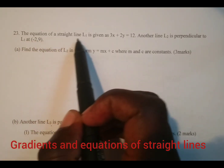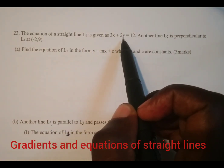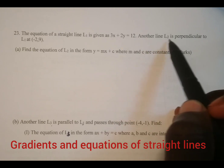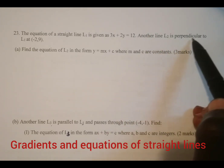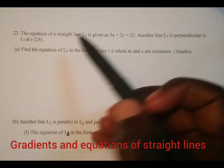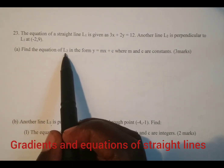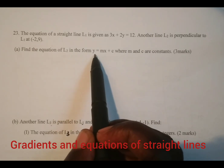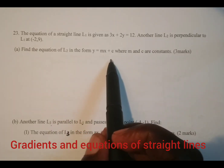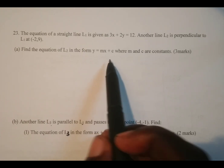The equation of a straight line L1 is given as 3x plus 2y is equal to 12. Another line L2 is perpendicular to L1 at the point negative 2, 9. Part A: find the equation of L2 in the form y is equal to mx plus c, where m and c are constants.